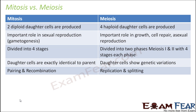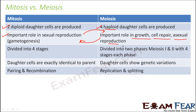Now a quick comparison between mitosis and meiosis. In mitosis, two diploid daughter cells are produced, whereas in meiosis, four haploid daughter cells are produced and the chromosome number is reduced by half. In mitosis, it plays an important role in growth, cell repair, and asexual reproduction. In meiosis, it plays an important role in sexual reproduction — that is gametogenesis. Please note it is the opposite for each.